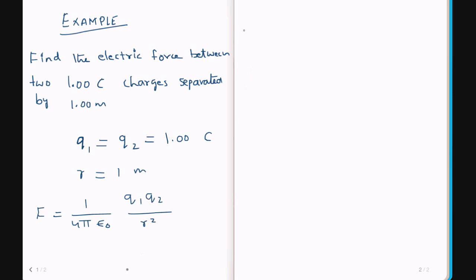We can substitute the values of Q1 and Q2, and one by four pi epsilon zero can be immediately written as 8.99 times 10 to the power 9, and the two charges are 1 times 1 divided by 1 squared, which gives you 8.99 times 10 to the power 9 newtons as the force between these two point charges. Since the charges are of the same sign, the force is repulsive. Thanks for watching this video.